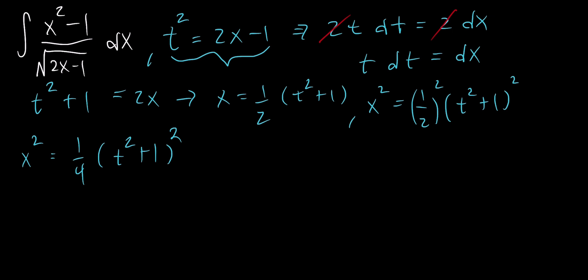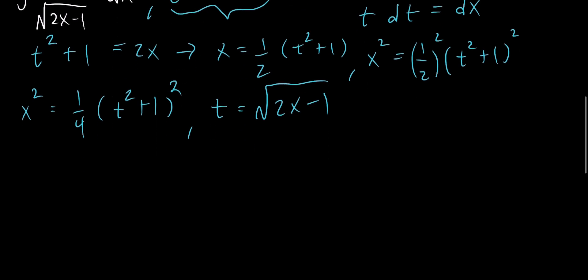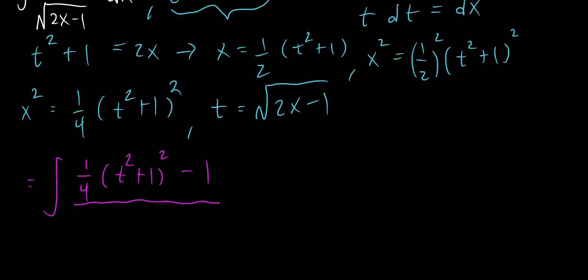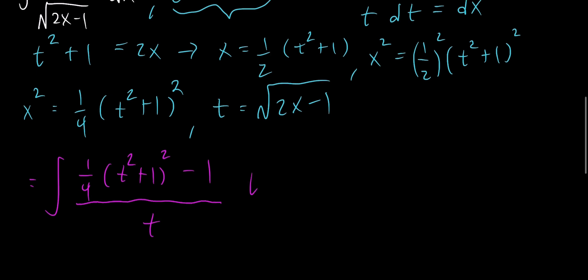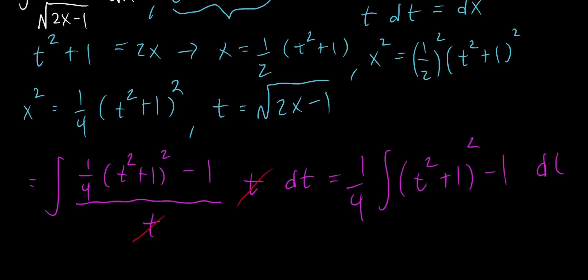We can keep manipulating the first equation further. We have t equals the square root of 2x minus 1. So now we have all the information we need to make the substitution. The integral becomes one fourth times the integral of t squared plus 1 squared minus 1 dt, after substituting and cancelling the t in the numerator and denominator.